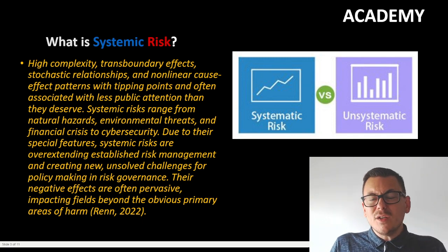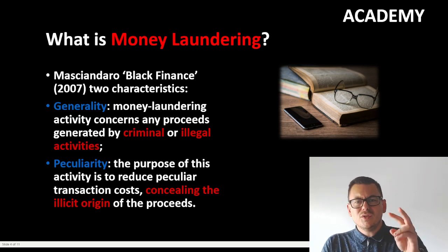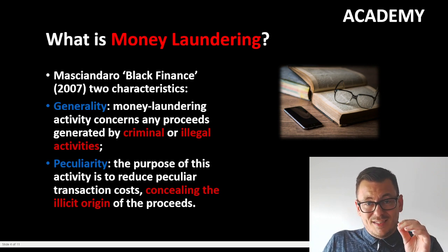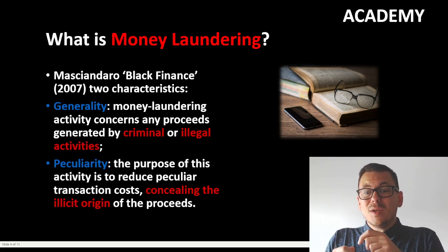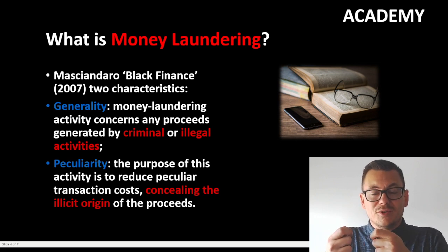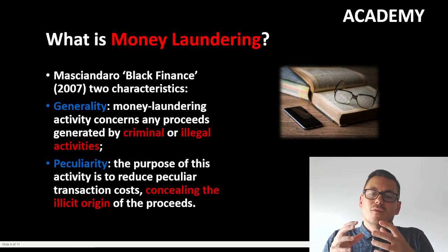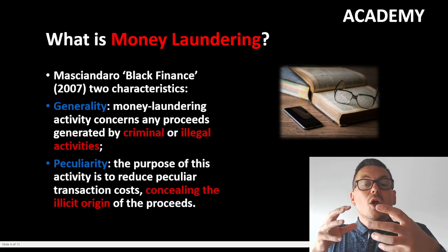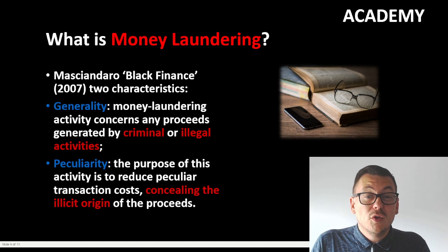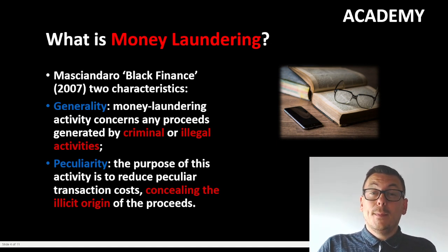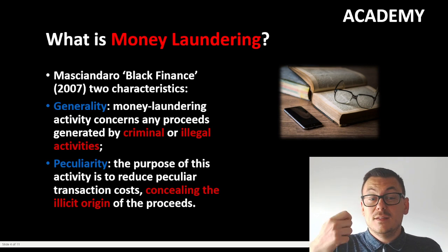When we look into systemic risks, how can we relate them to money laundering? Money laundering is characterized by two main characteristics: the general characteristic that the money has an origin from criminal or illegal activity, and the peculiarity characteristic that the aim of the process is to conceal the illicit origin at a very low transaction cost, so law enforcement cannot backtrack the money, and to hide the behind-the-scenes criminal activities that necessitate the laundering.